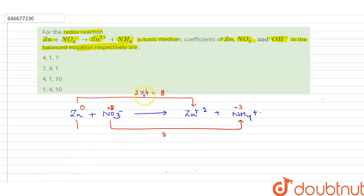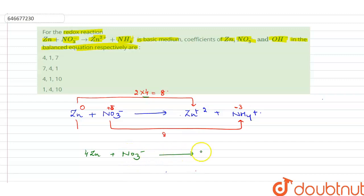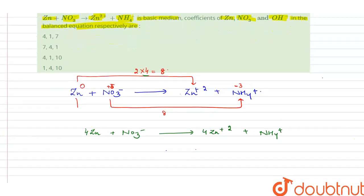Since we multiplied by 4, we write the net reaction as: 4Zn + NO3⁻ → 4Zn²⁺ + NH4⁺. Now we balance the charge.